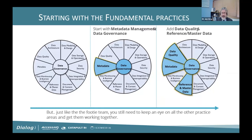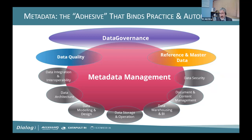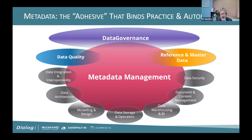Of those, we think data governance and metadata are probably the two most critical practice areas in data management, closely followed by data quality and reference and master data. Metadata, in my opinion, is probably the most critical practice area, because it's the adhesive that binds practice and automation together. Everything you do in data management — whether it's governance, data quality, reference, master data, security, data architecture — all these practice areas either generate or consume metadata. Understanding and maturing metadata is a vital step in capability uplift in any organization.